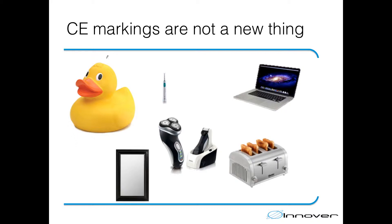Nowadays all toys must be CE marked — like this rubber duck — and if you have kids and buy them a puzzle, the puzzle is going to be CE marked. All medical devices are CE marked, all electric devices are CE marked like laptops, computers, cell phones, screens, TVs and so on. And nowadays even construction products are starting to be CE marked, like windows, doors, asphalt and so on. So CE markings are basically everywhere.